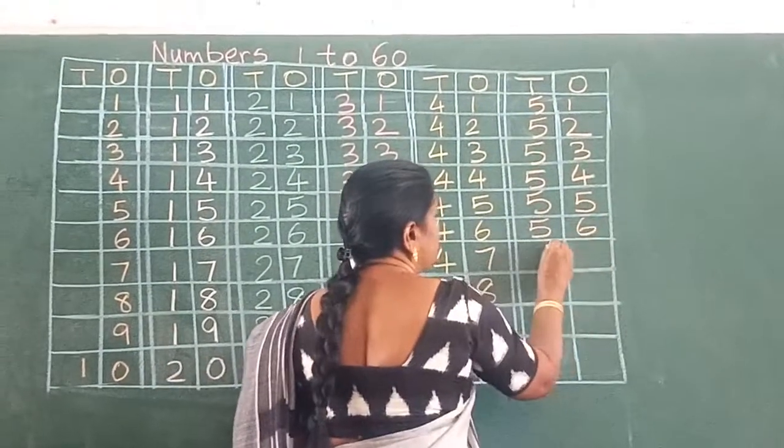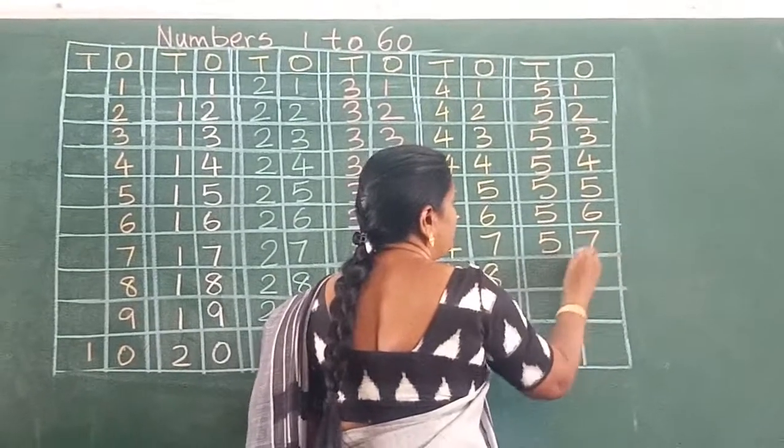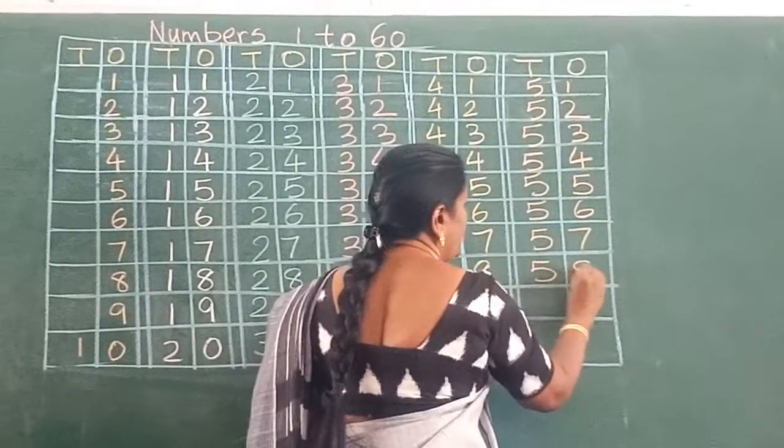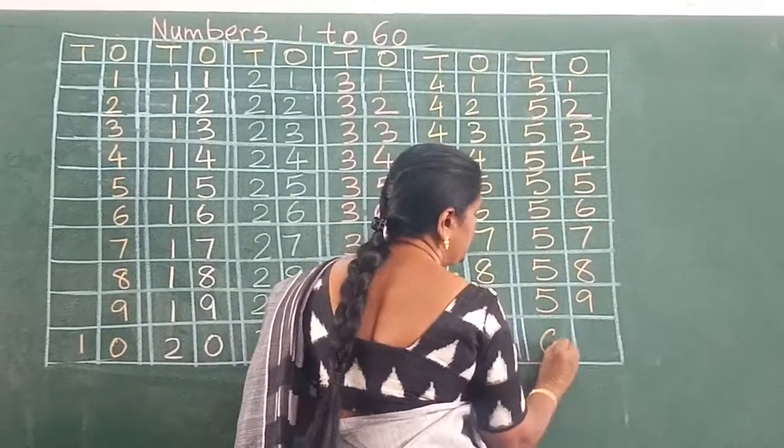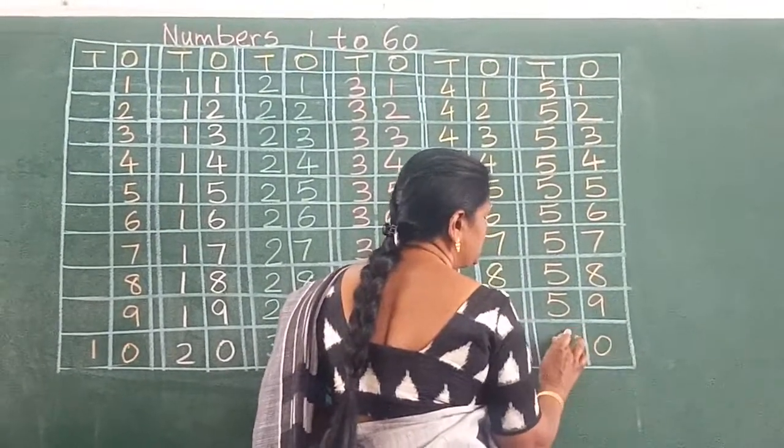5, 6, 56. 5, 7, 57. 58. 5, 9, 59. 6, 60, 60.